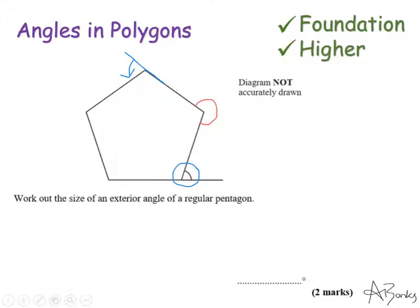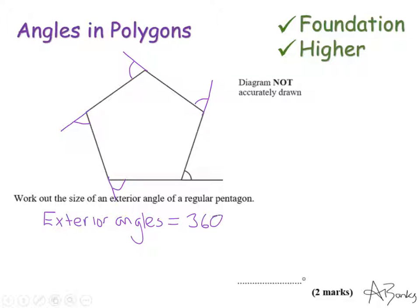Here are all five exterior angles of the pentagon. Together they make a full turn: as you travel around the outside, the turns add up to 360 degrees back to the beginning. So the exterior angles of any polygon — regular or not — add up to 360 degrees. To find one exterior angle of a regular pentagon: 360 divided by 5 equals 72 degrees.